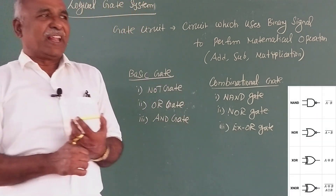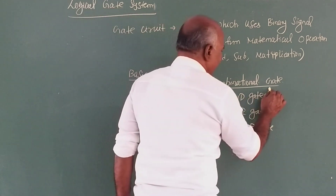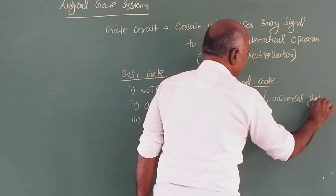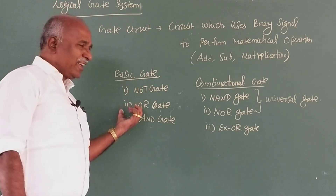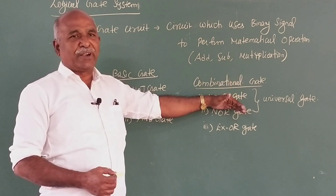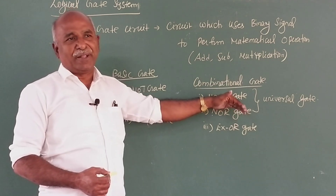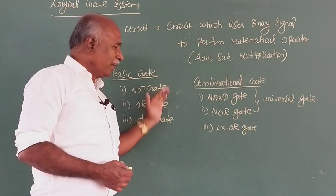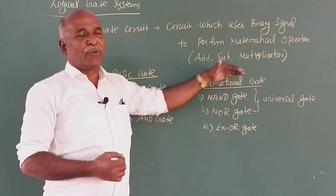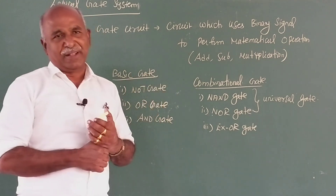In the combinational gates, the NAND gate and NOR gate — these two gates are called universal gates. The universal gate concept means that using only these basic gates, if we need any combination gate, we can use the basic gates to construct it. That is why these two gates specially are given the name universal gate — they can be used to perform all gate functions.